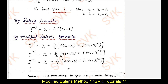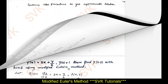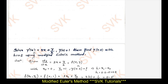This is the procedure for solving problems using modified Euler's method. Now let us solve an example: solve dy/dx equal to 3x plus y/2, with initial condition y(0) equal to 1. Find y(0.2) with step size h equal to 0.2 using modified Euler's method.